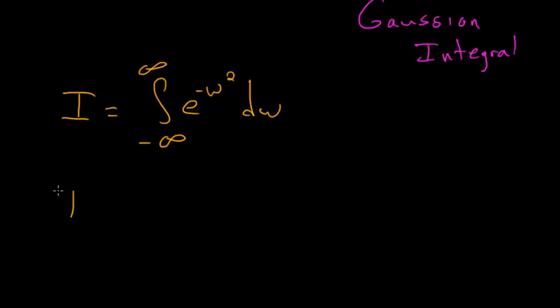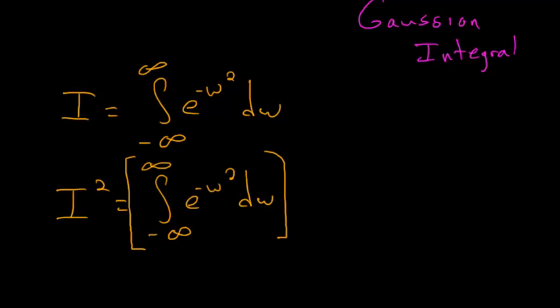And then what I'll do next is I'll square this integral. So I'll rewrite this, and now this integral is just multiplied by itself. But on this part, I'll replace w with a different variable, say v, since it won't actually change the value of the integral. So the integral from minus infinity to infinity of e to minus v squared dv.